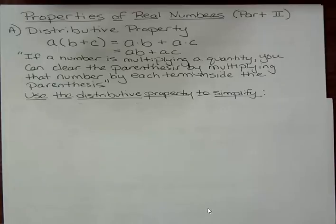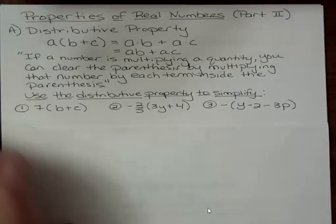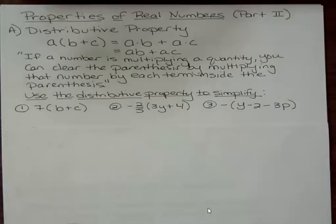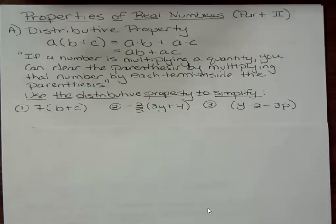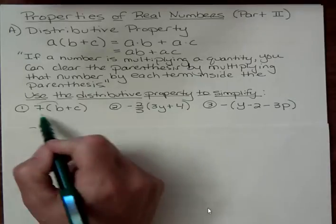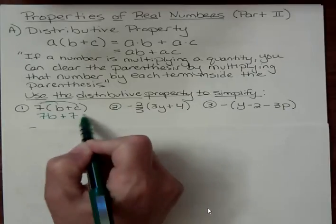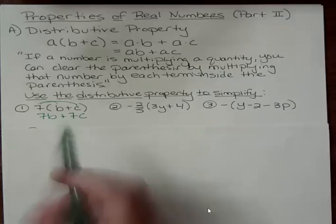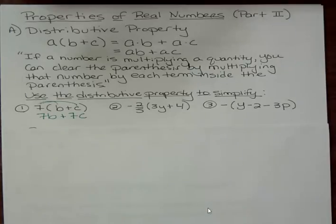Use the distributive property to simplify. I'm going to take 7 times b plus 7 times c. That's all the distributive property does. Now I have this common factor of 7 in there, because I just multiplied everything by 7.